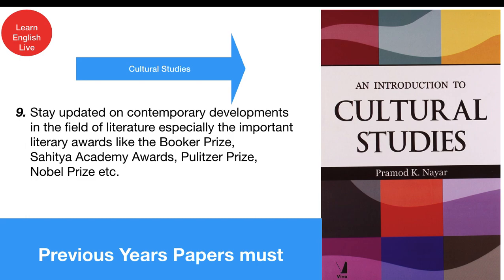Another important thing is staying updated on contemporary developments in literature — awards and prizes like the Pulitzer Prize, Nobel Prize, Booker Prize, and Sahitya Academy Awards from the last five to ten years are very important to remember. Use online resources as much as possible. When studying these topics, summarize and make quick notes, which will help at the time of revision.